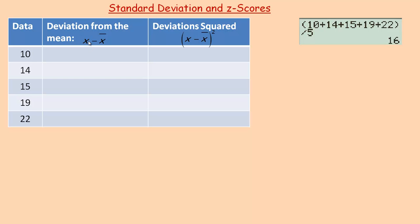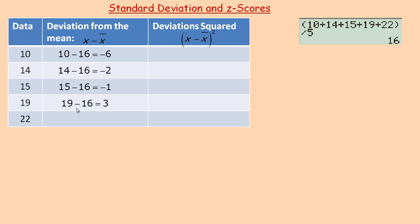The deviation from the mean is the difference each of these is from the mean. So you go 10 minus 16 — not 16 minus 10. The 10 minus 16 is negative 6; that deviation means it's 6 below the mean. Do the same with 14, you get a deviation of negative 2. 15 minus 16 is negative 1. These ones are going to have positive deviations because they're bigger than the mean: 19 minus 16 is 3, and 22 minus 16 is 6.